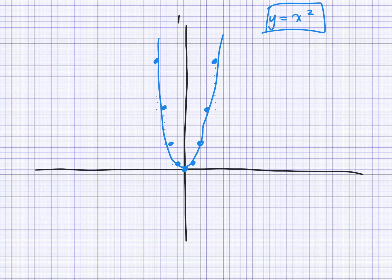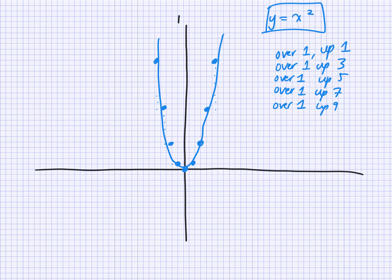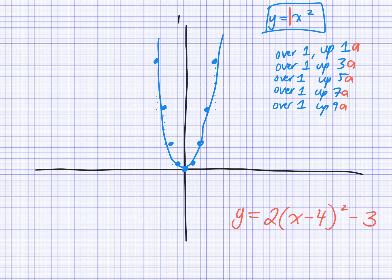If you remember the step pattern — over one, up one; over one, up three; up five, up seven, up nine, and so on. You're increasing by two every single time, starting at one. The step pattern is actually over one, up one times A. Because in this case A is one, so one times one is one, three times one is three. If it's negative, it would be down one and so on.